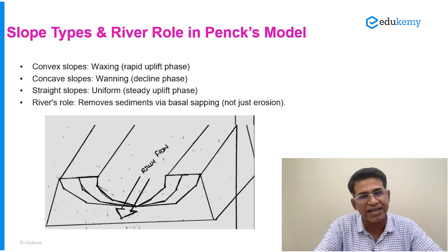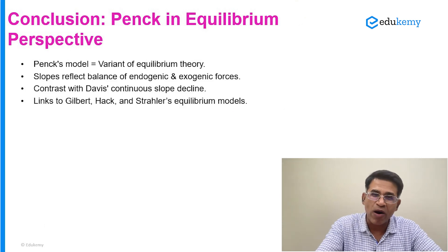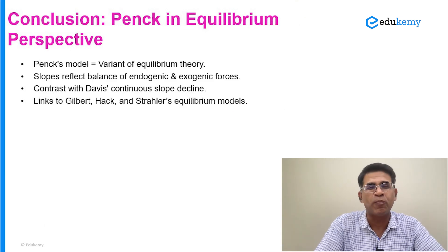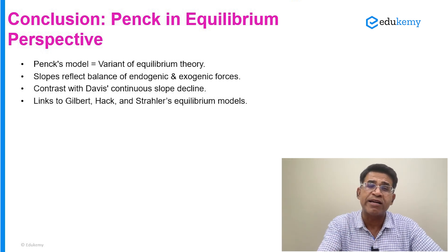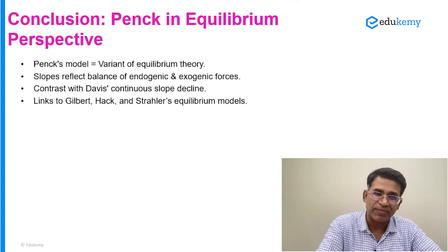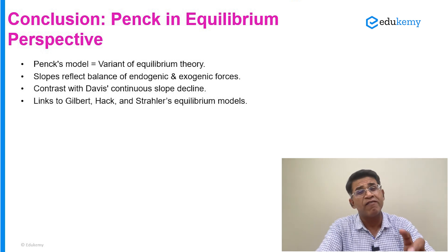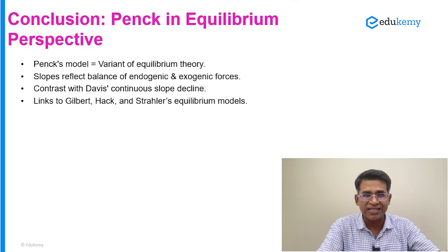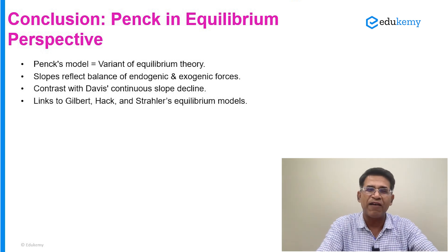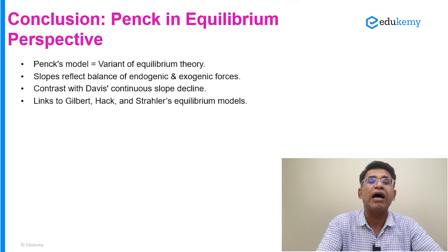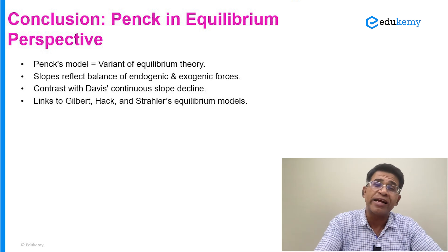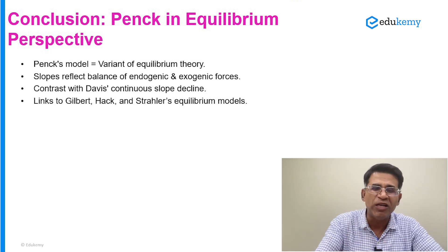With this much content, your 10-mark or 15-mark answer is complete. Cover what slope replacement is and its three or four key aspects. Make sure you write about slope replacement in the context of Davis's model — always compare, contrast — and end the answer with equilibrium theories. In this revision series, I have discussed the equilibrium model, including the ideas of J.T. Hack, Gilbert, and Strahler, and what they tell us about slope formation. Peng's model is one of the variants of the equilibrium model.